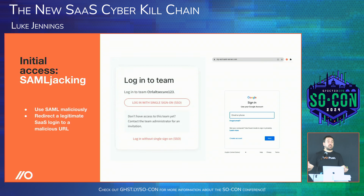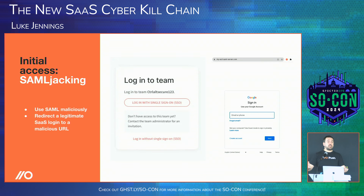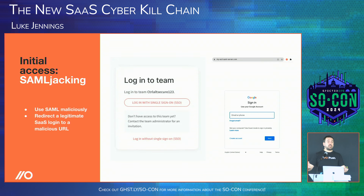Moving on to persistence, which is really interesting in the SaaS world. In an endpoint world I'd be thinking about run keys, scheduled tasks, services — there are about a million ways on Windows. In the SaaS-native space it's quite different: we're talking about how to maintain access to SaaS applications. Techniques include using OAuth, link sharing, API keys, ghost logins, and if you've compromised an IdP, things like inbound federation — setting up an external identity provider so you can authenticate using your own SAML server in the future.